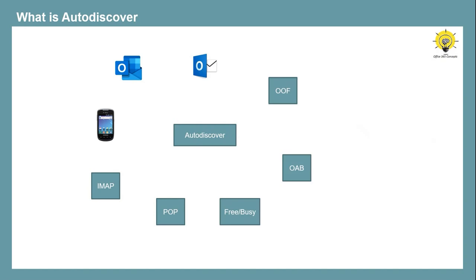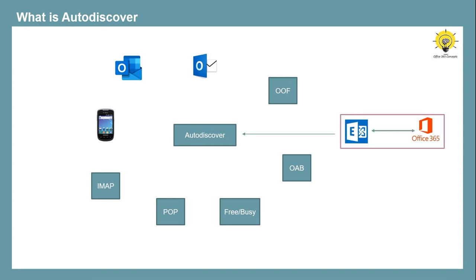For example, Free/Busy lookups, offline address book, out of office — and if you have Exchange Hybrid deployed, Autodiscover will be used for cross-premises permissions, cross-premises Free/Busy, and in mailbox migration. So if Autodiscover service is not configured properly in your Exchange Server, all these applications and services will not work.